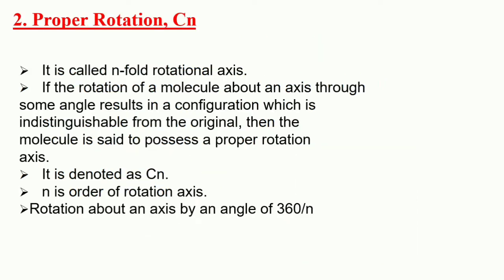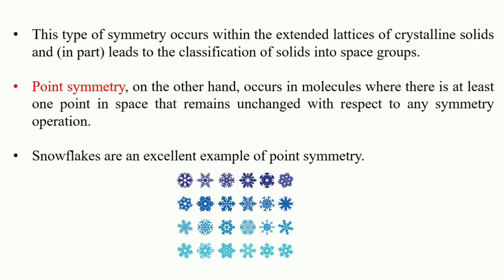The second symmetry operation is the proper rotation, which is represented by Cn. A proper rotation is a symmetry operation that occurs around a line known as a proper rotation axis, in order to bring the object into an equivalent configuration. For example, a snowflake has a six-fold proper rotational axis that runs perpendicular to the plane, passing directly through its center.